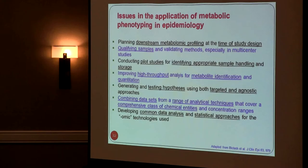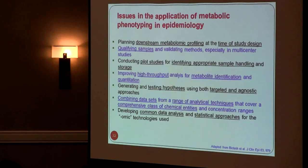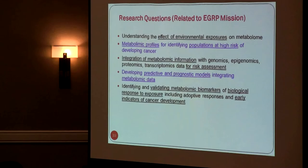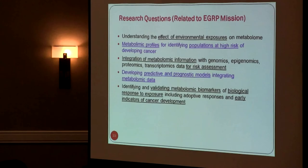The key challenges in metabolomics that NIH has identified include: downstream metabolomic profiling at the time of study design, qualifying samples, conducting pilot studies, identifying appropriate sample handling, and ensuring high throughput. High throughput is the main requirement — anything cannot come into the clinic if epidemiological studies have not been done. Assays should be developed for humans, not just cell lines or animals. Combining datasets from your institute with general data in coordination centers, and collecting information about environmental exposure, is also important.